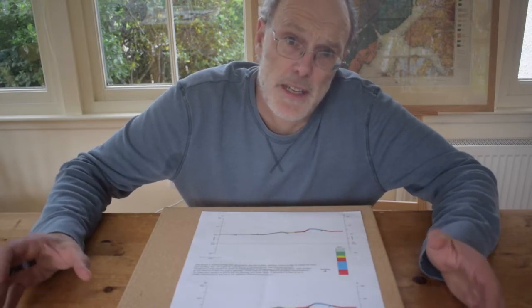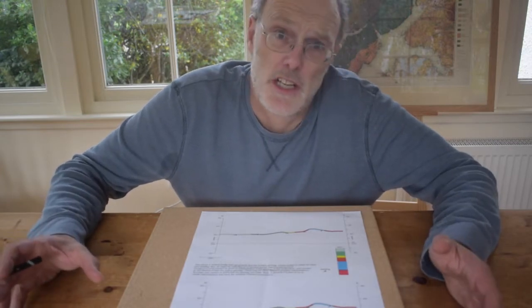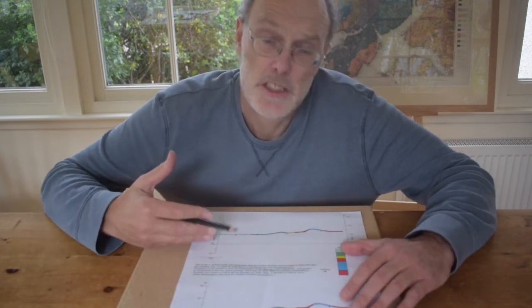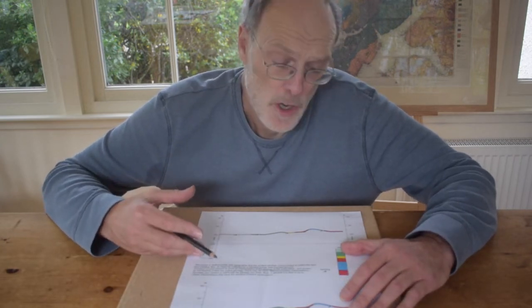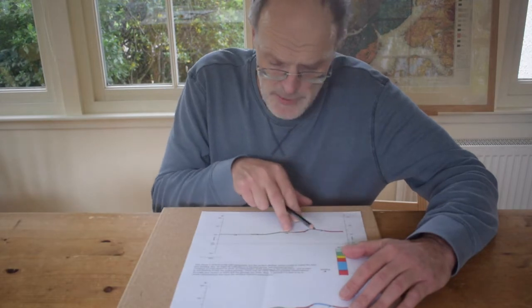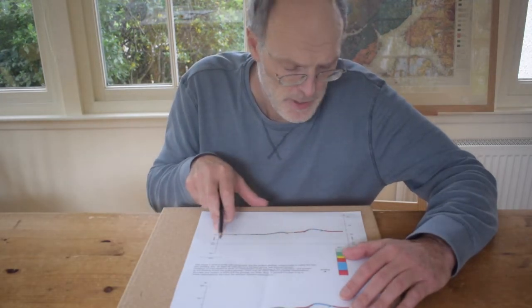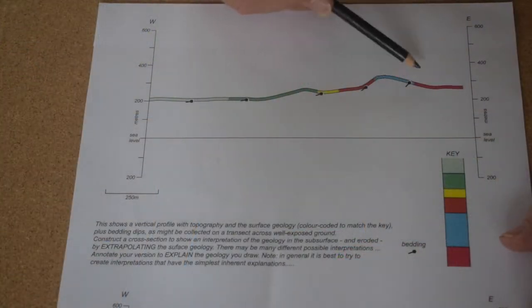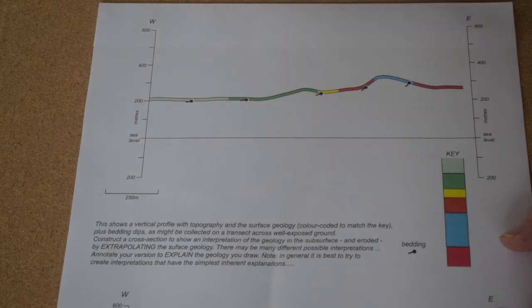Drawing cross sections is a basic requirement for most earth scientists and we can explore how to do this using this elementary example where we've got surface geology shown by the colour strip along with these orientations of these tadpole shapes which are the bedding orientations.